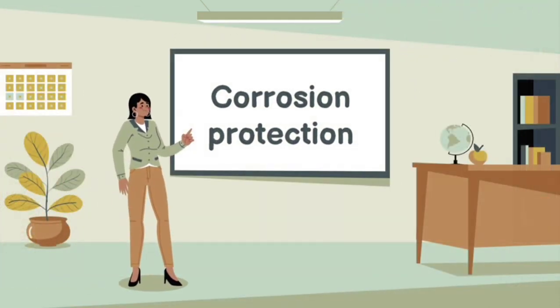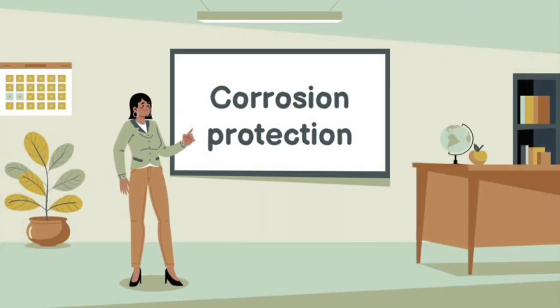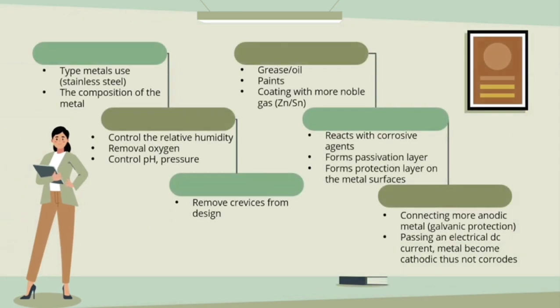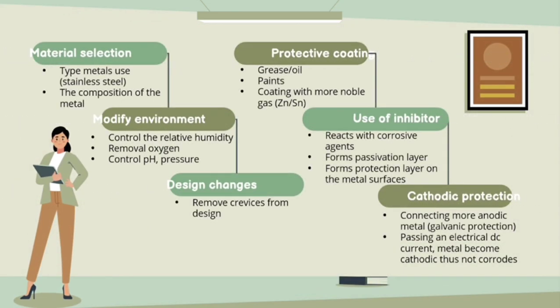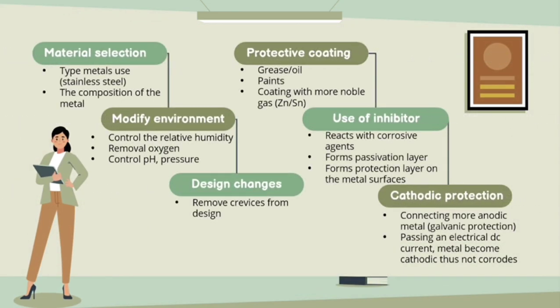In order to prevent and minimize corrosion, we can use corrosion protection. Here we have six types of protection which are material selection such as using a suitable metal, and modifying the environment so that we can control the pH and pressure. Next is changes in the design where we can remove the crevices from the design.